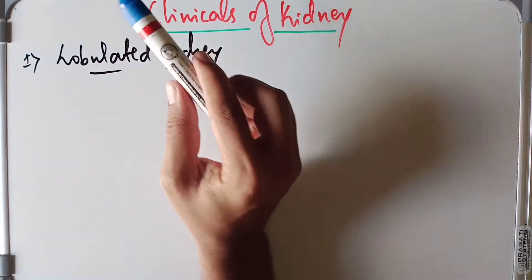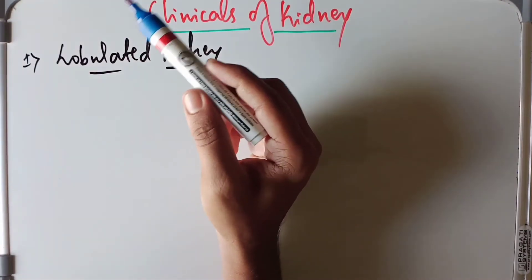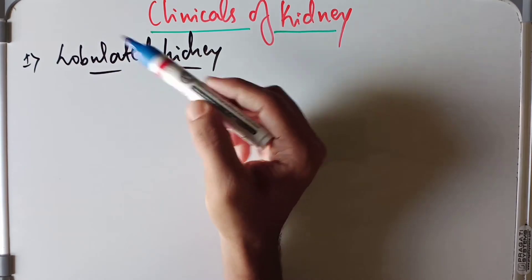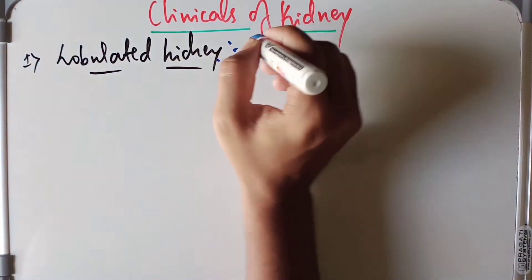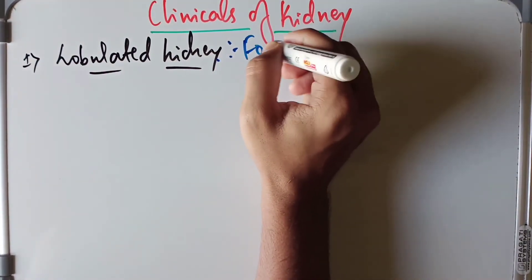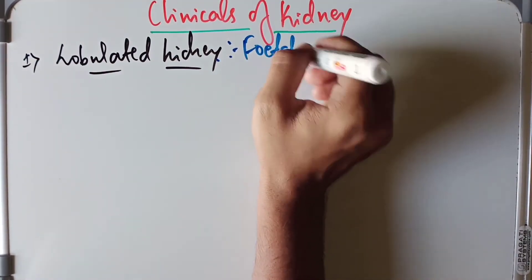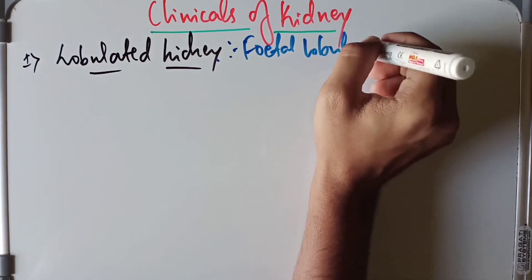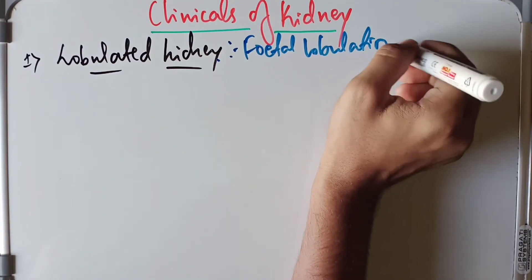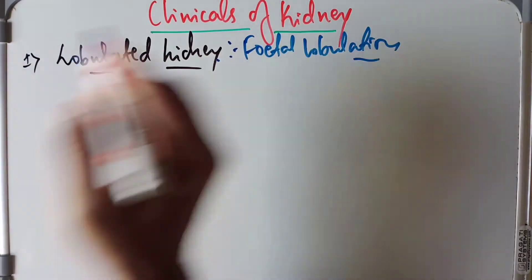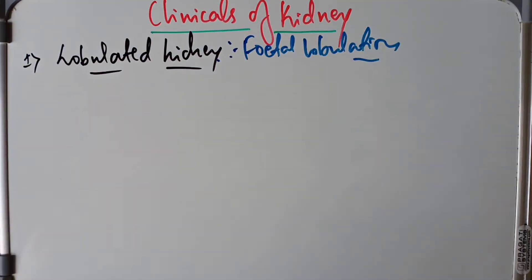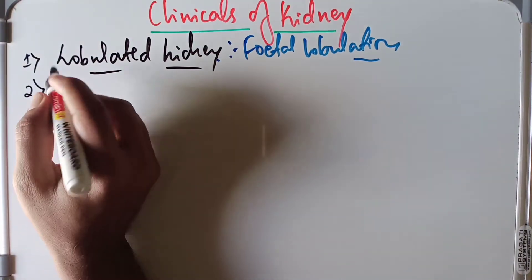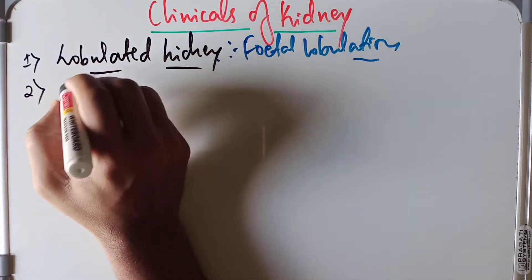The lobulated kidney is nothing but the persistence of fetal lobulation in the adult kidney. The fetal lobulation persists into adult life, and that is known as the lobulated kidney.